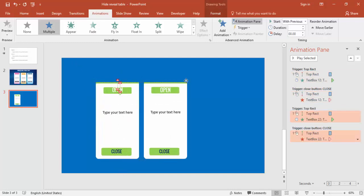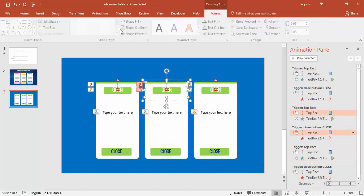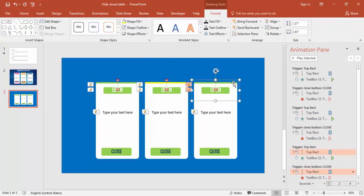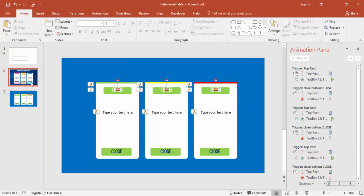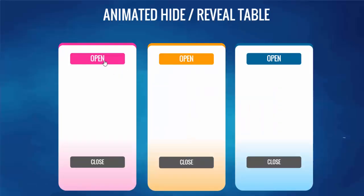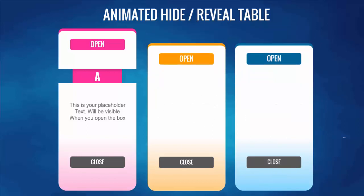Similarly, you can press Ctrl+D to duplicate the entire group and bring it into position for option B and option C. Then just change the colors — for example yellow and red — and update the text. Once done, your final animation is complete. That's it for this tutorial — hope you like this video. Don't forget to subscribe to OSVFX. See you soon with more interesting content. Goodbye!